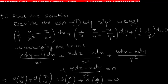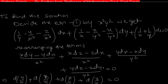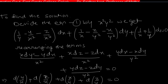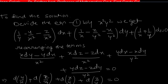Collecting and rearranging gives four groups: (x dy - y dx)/x² + (x dz - z dx)/x² + (y dx - x dy)/y² + (y dz - z dy)/y² = 0. Each group is recognized by the quotient rule: the first is d(y/x), the second is d(z/x), the third is d(x/y), and the fourth is d(z/y).